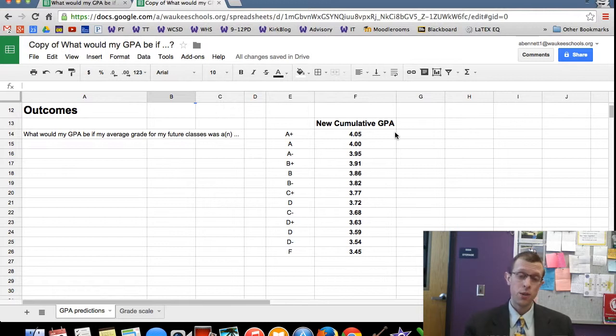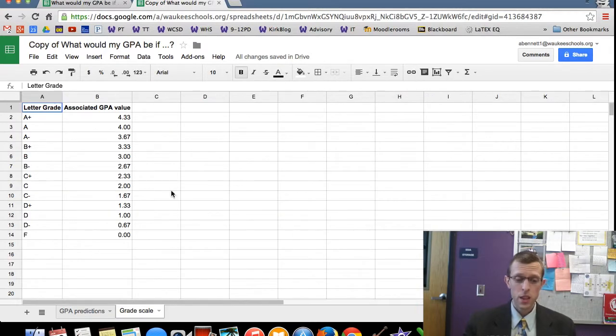Now, if you are not within the Waukee School District and you're watching this video, just a note: the grade scale in Waukee is a 4.33 grade scale. So 4.33 is an A-plus. If your grade scale looks different than that, you can edit these numbers here.